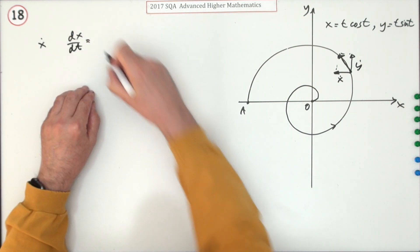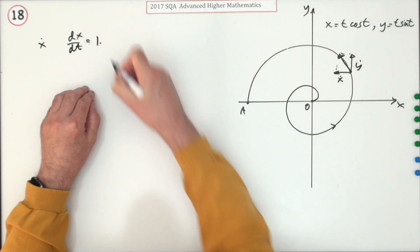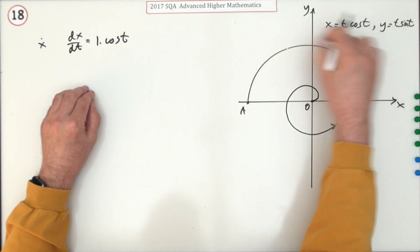That's a neater notation. It's a product rule, so it's going to be 1 times—I'll leave that alone—cos t. Now leave the t alone, and that'll be negative, so it'll be minus t times sin t.